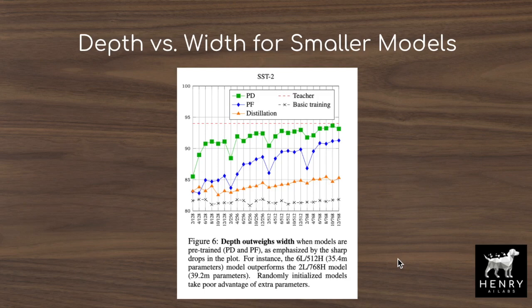The next question explored is: with a limited computing budget, should you have a deeper network or a larger hidden dimension? Should the embedding table go into 256-dimension vectors with 256 hidden dimension throughout the model, or should you train a deeper network? The takeaway is that it's better to have a deeper model than a wider model with the pre-training distillation algorithm.